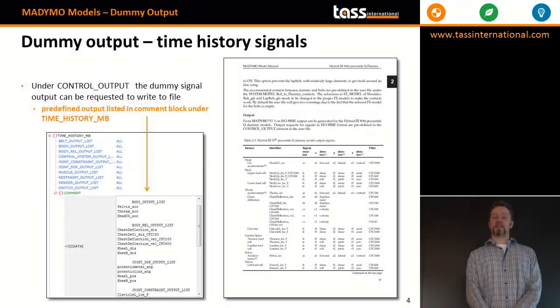Under the control output element in the dummy user file, signal output can be requested. All output available is listed in the dummy manual.